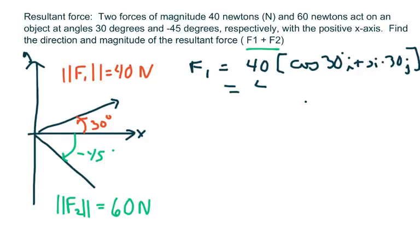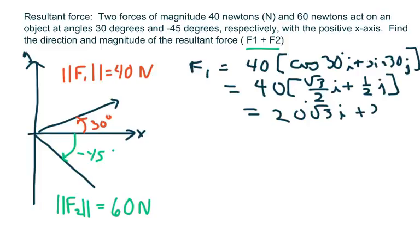Because sine is your vertical and cosine is your horizontal. So we're going to get 40 times square root of three halves i plus one half j, which equals 20 square root of three i plus 20 j. So that's force one.